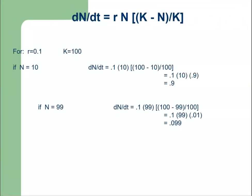Here are a few examples. If r is 0.1, carrying capacity is 100, and N equals 10, then the rate of change with respect to population is 0.9. If the carrying capacity is 99, then the change in population with respect to time is 0.099.